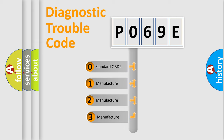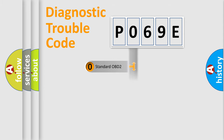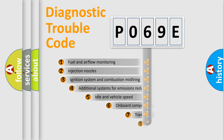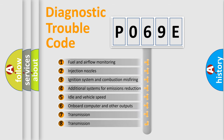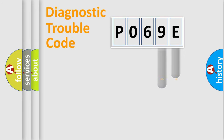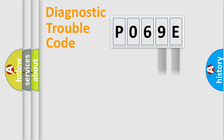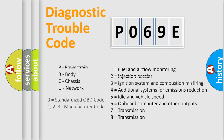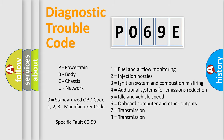If the second character is expressed as zero, it is a standardized error. In the case of numbers 1, 2, or 3, it is a manufacturer-specific expression of the car error. The third character specifies a subset of errors. This distribution is valid only for the standardized DTC code, and only the last two characters define the specific fault of the group. Such a division is valid only if the second character code is expressed by the number zero.